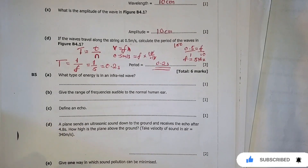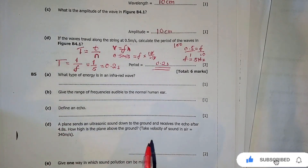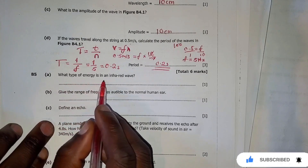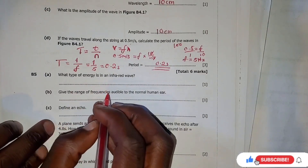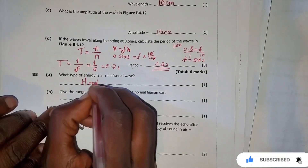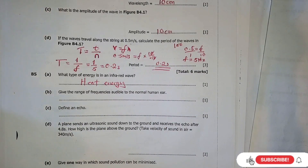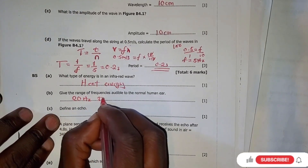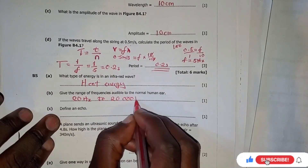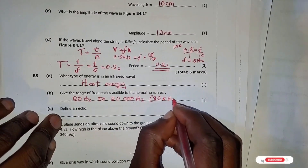Let's go to question 5. The first question asks: what type of energy is in an infrared wave? The answer is heat energy. The second question asks: give the range of frequencies audible to the human ear. The audible frequency range is 20 hertz to 20,000 hertz, which can also be written as 20 kilohertz.